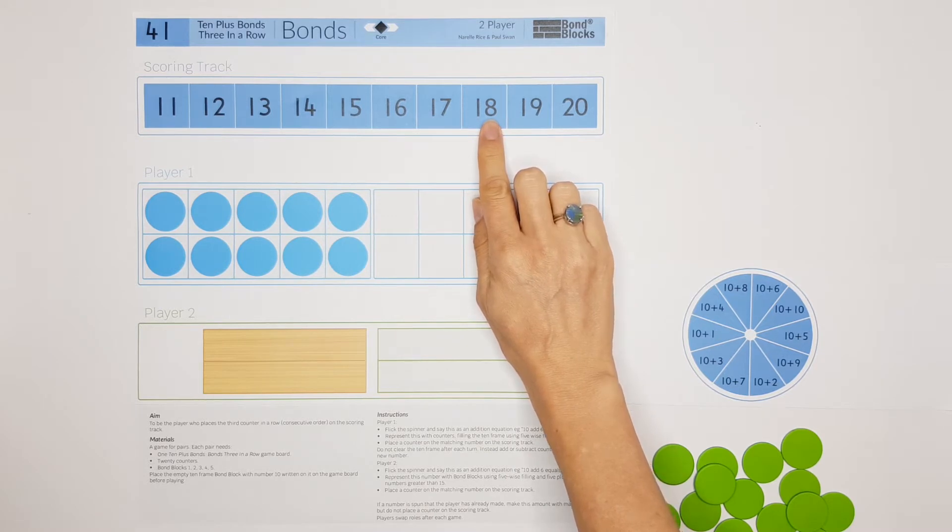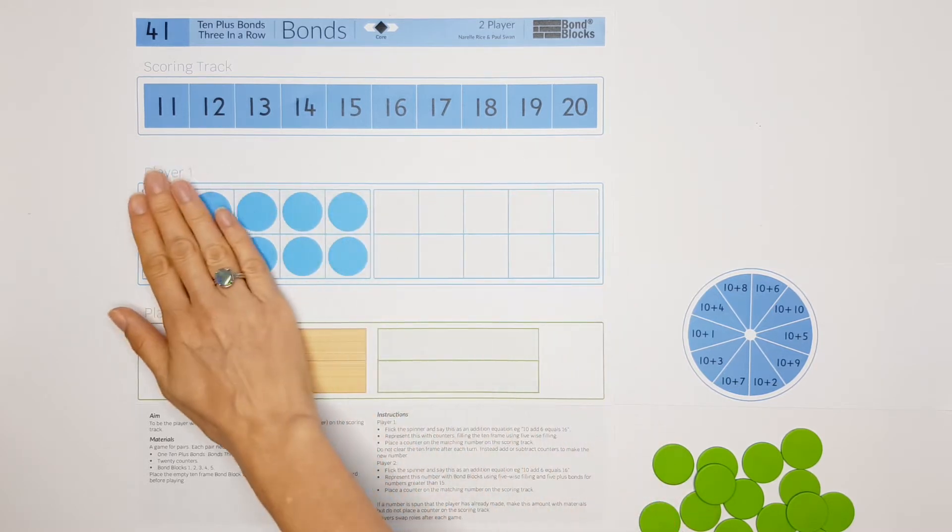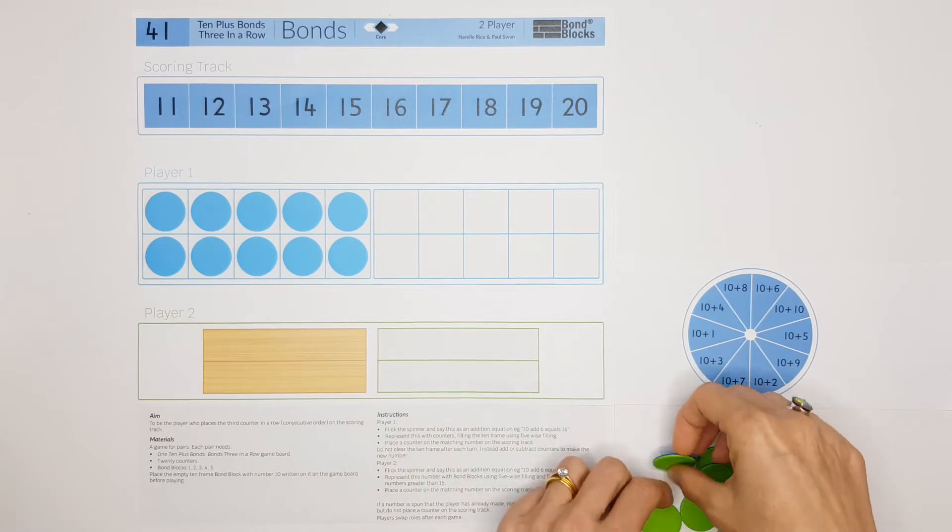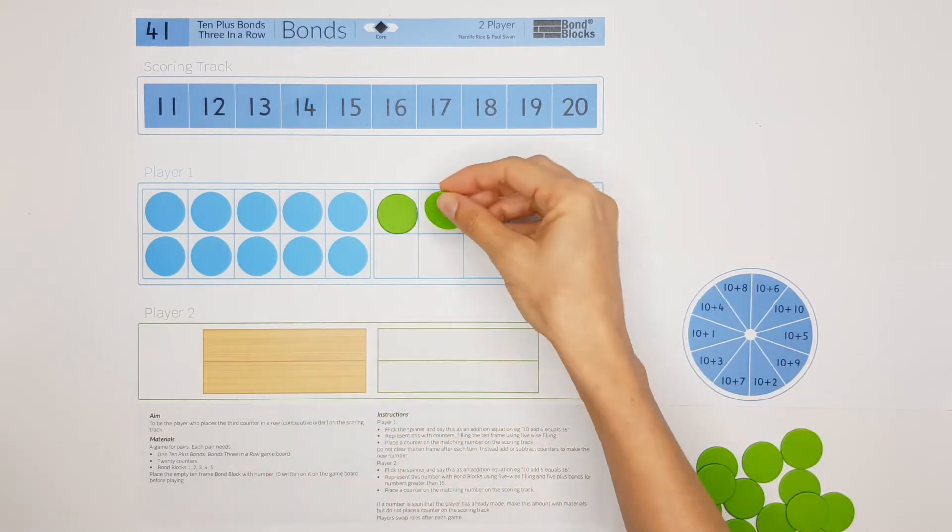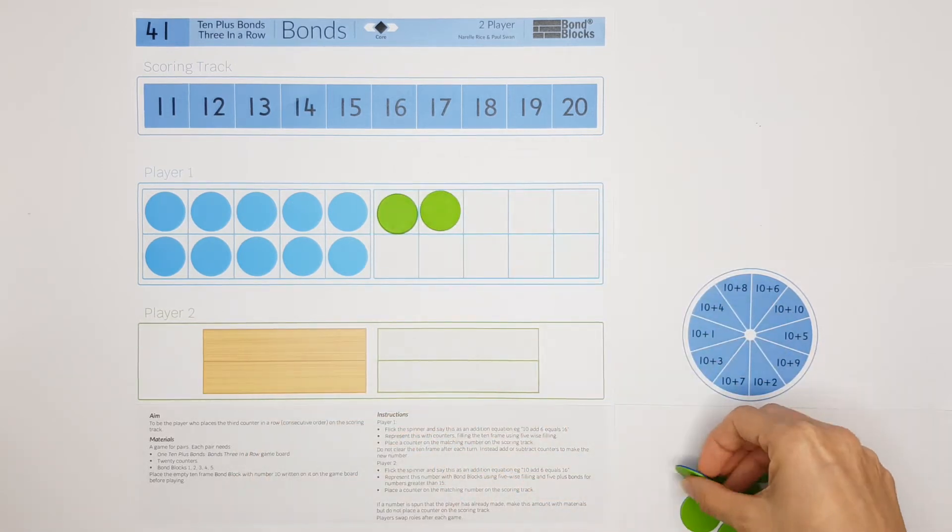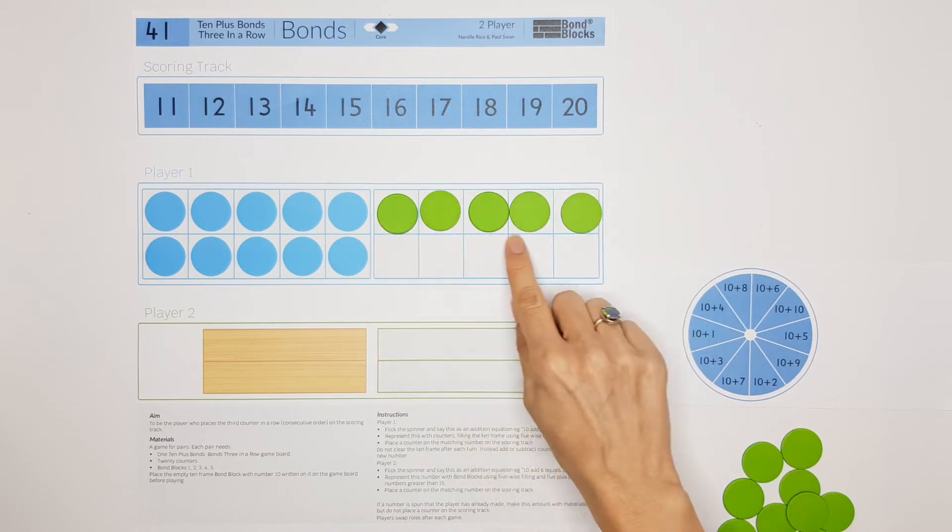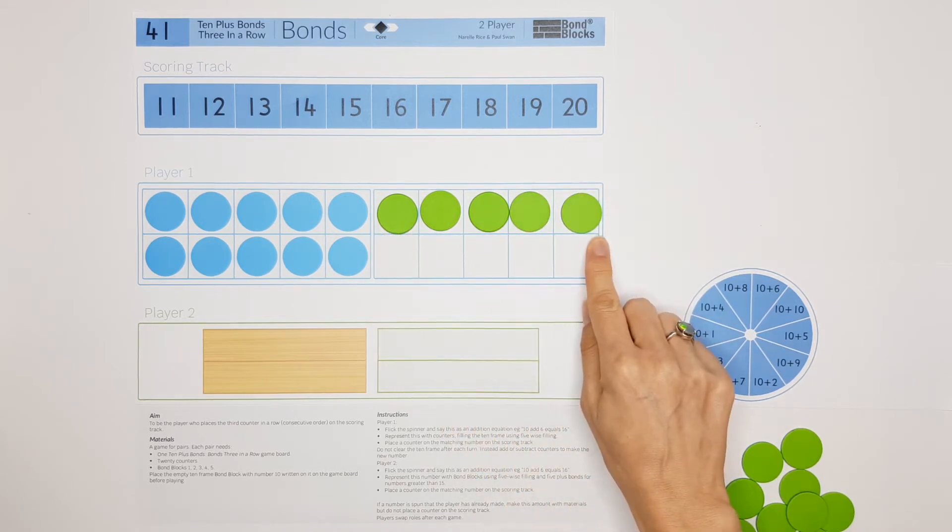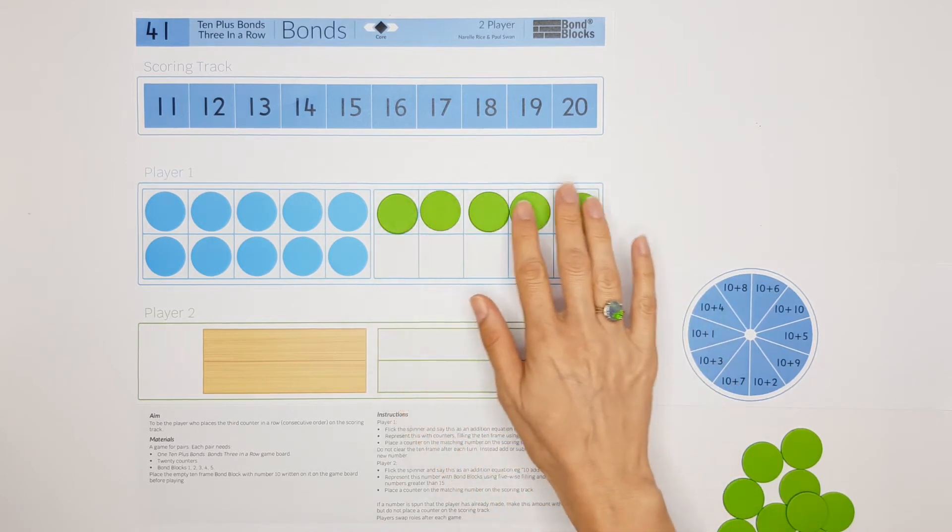When I fill my 10-frame with counters, I'm going to use something called five-wise filling. I fill the top row first, working from left to right, because this is worth five, like one hand, so that would be 15.